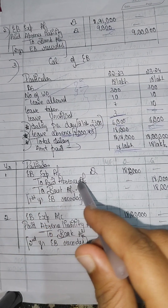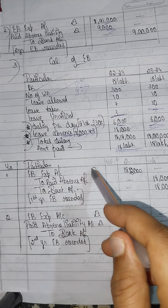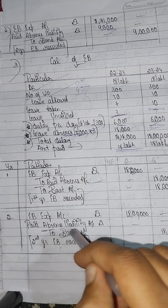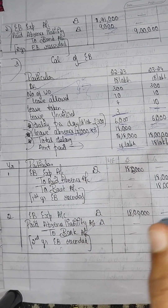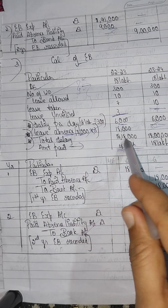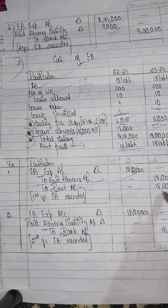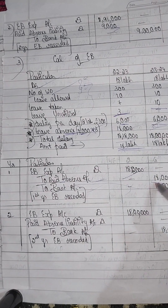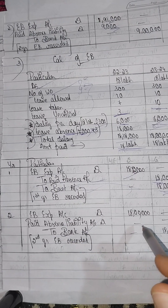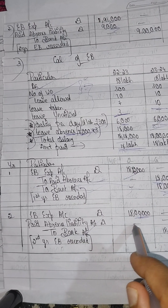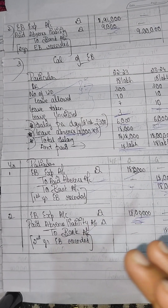The journal entry for Problem 3 is: Employee Benefit Expenses Account debit, to Bank Account. In 2022-23, total salary is paid via bank. In subsequent years, if there is an excess, Paid Absence Liabilities account is used to adjust. The total amount paid is 18,00,000 to bank account, with adjustments for unutilized or excess leave carried forward.